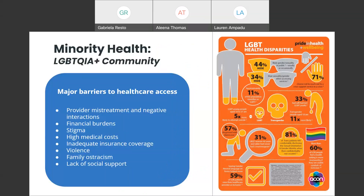The last community we'll be talking about with regards to minority health is the LGBTQIA+ community. The barriers that are unique to this community include provider mistreatment and negative interactions, financial burdens, stigma associated with queer identity, high medical costs, inadequate health care insurance, violence, family ostracism, and lack of social support. We see that a lot of these barriers translate into outcomes shown in the infograph on the right-hand side. For example, LGBT young people aged 16 to 27 are five times more likely to attempt suicide because of many of the barriers and the stigma that they face in society.